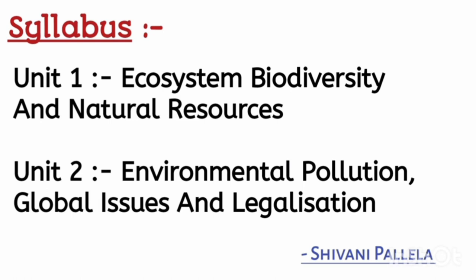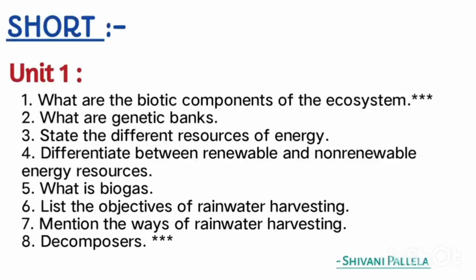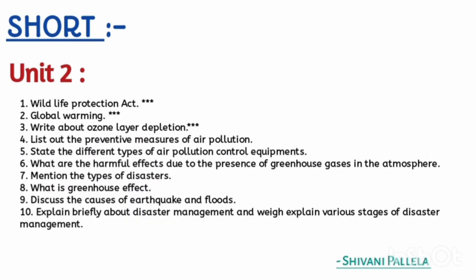I have received nearly 10 to 12 calls asking what questions to learn. If you are having a sem1 backlog of EVS also, this video is useful. From unit one, I have given eight questions. The important ones are: biotic components of ecosystem, decomposers, rainwater harvesting, and differences between renewable and non-renewable resources - just understand the topic, no need to memorize hard. From unit two: wildlife protection act, ozone layer depletion, global warming, and greenhouse effect - these four are important.